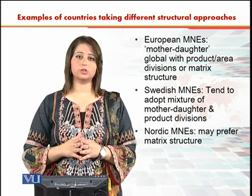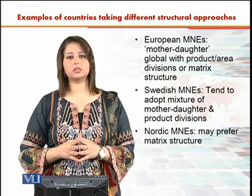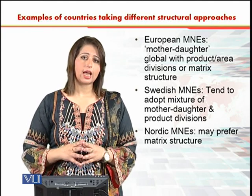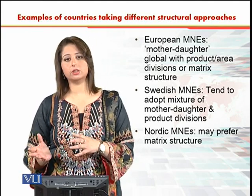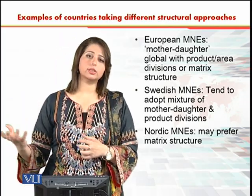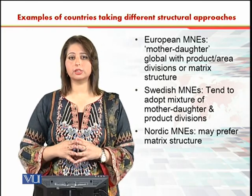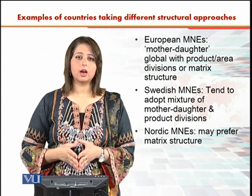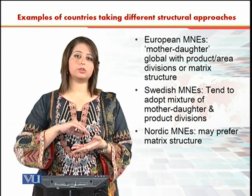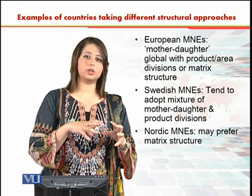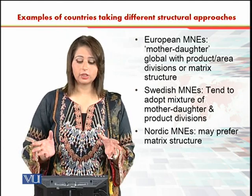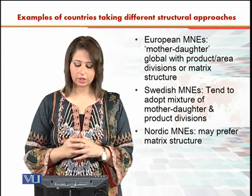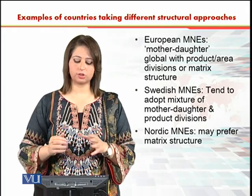National cultures have a huge impact on how an organization and its structure evolve and grow. From real life research, we have found that European multinationals are very different from American multinationals, and Japanese multinationals are totally different. Chinese and Korean multinationals have different types of structures and evolutionary paths. So let's look at each one of them. The European multinational structure usually grows from the regular mother-daughter structure — that is the functional mother-daughter structure — to a product, area, divisions, or matrix structure.